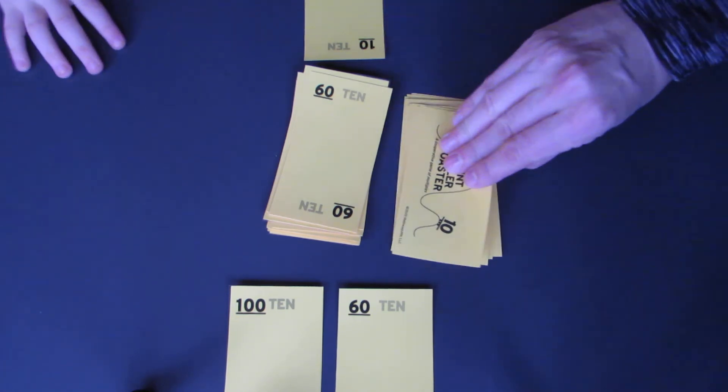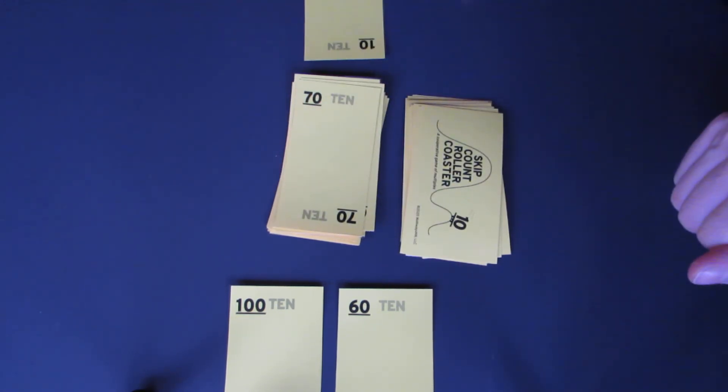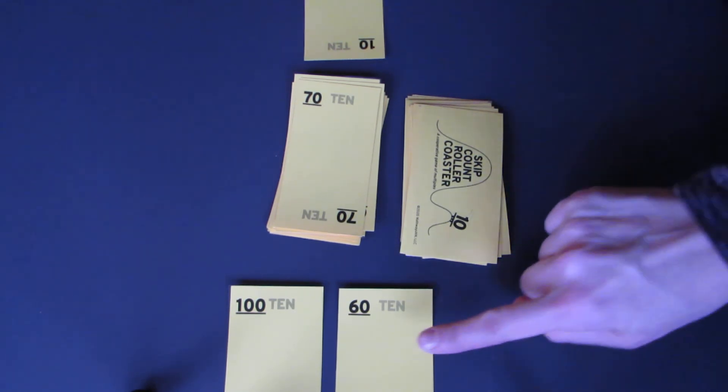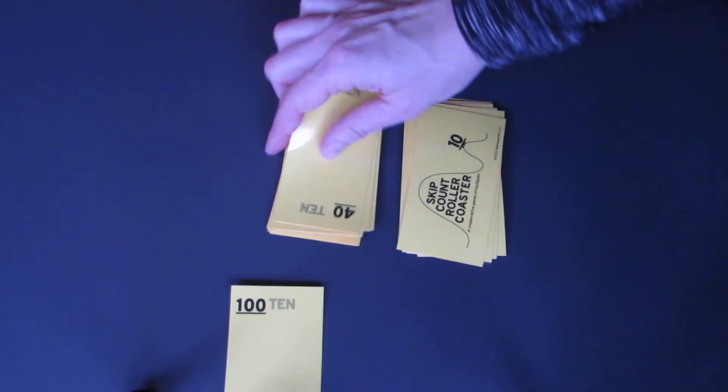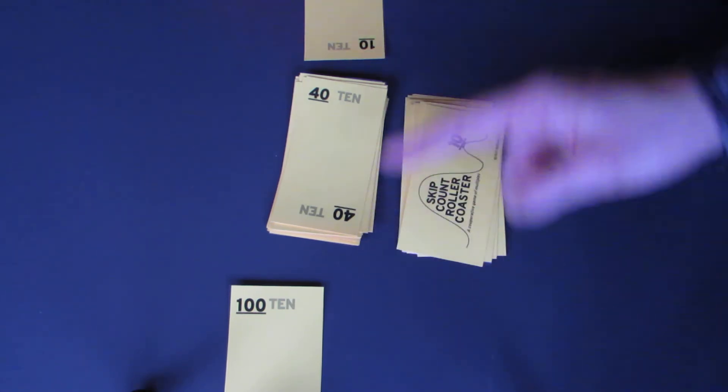So let's see. 70. Can I play anything? 80. I could play an 80 or 60. So I'm going to play the 60. 50. 40. 40. Do we have a 50 or a 30? No.